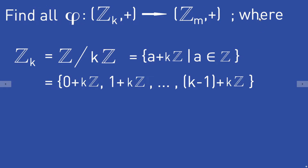The residual class group Z_K is defined as the set of all elements of the form A plus K times Z, where A is an element of the integers. This set equals {0 + KZ, 1 + KZ, ..., (K-1) + KZ}, which means that Z_K has exactly K elements.